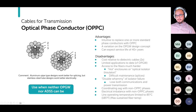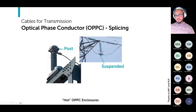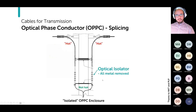OPPC also has a limited operating temperature, so if you're operating in an area that needs higher operating temperature, this isn't an option. It is an option when you can neither use OPGW nor ADSS. There are examples of a hot enclosure for OPPC, and an isolated enclosure where you have insulators and below them it's isolated — but if your insulators fail, you have both a power and communication outage.